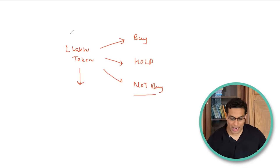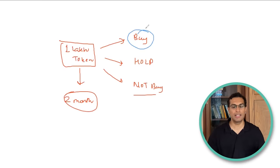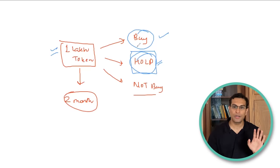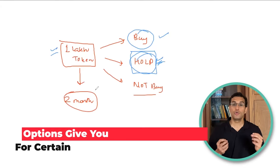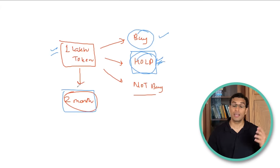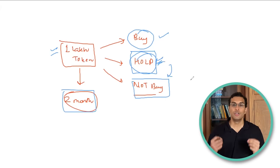That 1 lakh rupee gives you a waiting period of 2 months, during which you can make three calls. First, you can buy the house outright as agreed — pay the builder the remaining 99 lakh rupees and the house is yours. Second, you get to wait and watch for those 2 months — this is not an infinite amount of time. Third, after the wait-and-watch period is over, you can make the final decision of not buying the property at all.